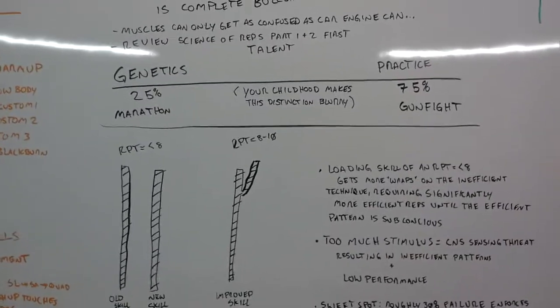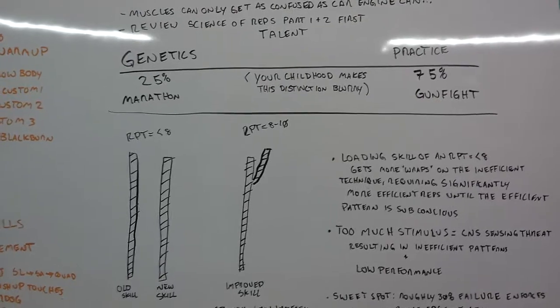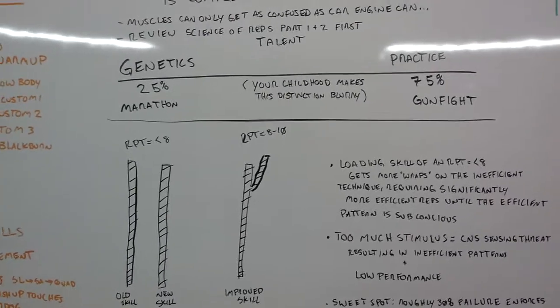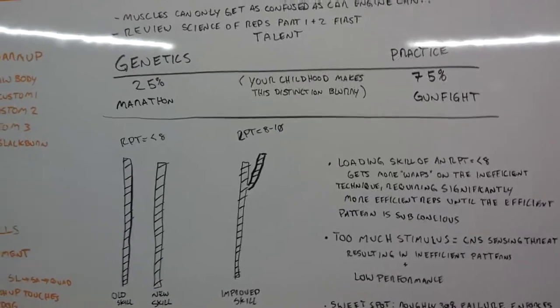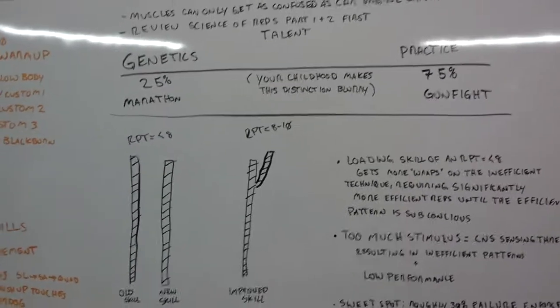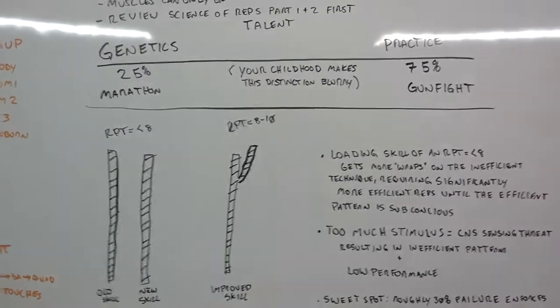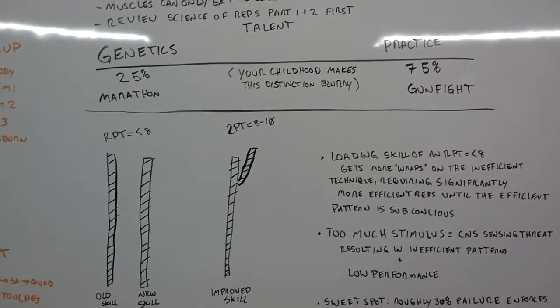So talent, where does talent come from? For years it's been like, well is it genetics? Is it skill and practice? Really depends on the sport. In general, 25% is going to come from genetics, 75% from practice of skills.